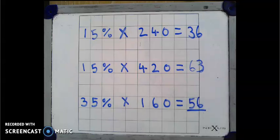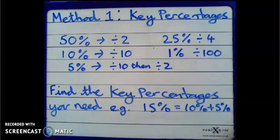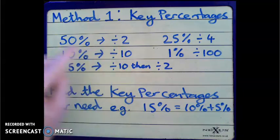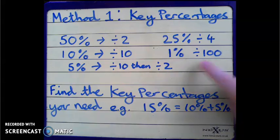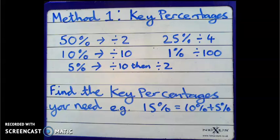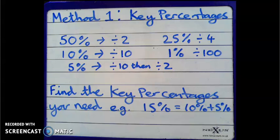Let's just go through those steps for each method again. Method 1, using key percentages. To find those key percentages, divide by 2 we'll find 50%, divide by 4 we'll find 25%, dividing by 100 we'll find 1%, dividing by 10 we'll find 10%. To find 5%, you can divide by 10, then divide your answer by 2. Add the percentages that help you find your answer together.